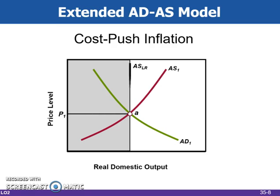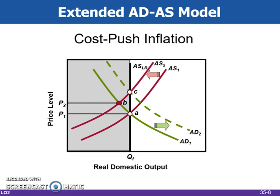Under cost-push inflation, factors have arisen that have increased the cost of production at each level of production, causing the short run aggregate supply curve to shift upwards and increase the price level. Government usually moves to counter the negative effects by using fiscal and monetary policy to increase aggregate demand, but this only ends up moving prices even higher as the economy seeks to return to the natural full employment level of output. If the government does not take action, the economy will eventually return on its own to the natural level, but the process will be painful, as widespread business failures, layoffs, and plant closures usually follow. So the government ends up between a rock and a hard place: do nothing and deal with an extended recession, or take action and end up with higher inflation.